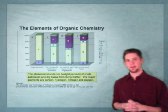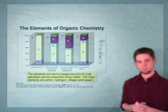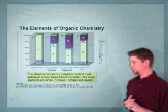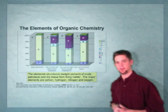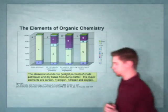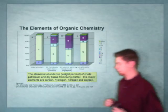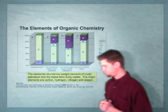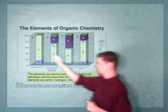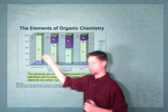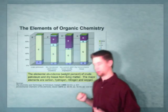What you're looking at here is a chart that shows you the elements of organic chemistry. You can see from this chart some very interesting trends in the composition of various things we find in nature. The bar here shows you the composition of crude petroleum. We use it for fossil fuels, and you can see that carbon is a huge constituent, with hydrogen making up the number two component.